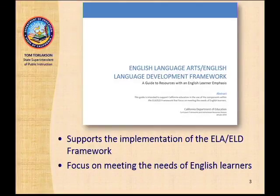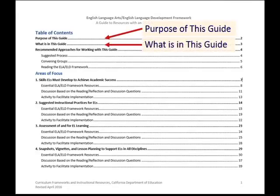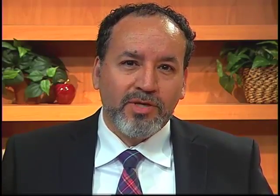This guide is intended to support California educators in the use of the resources throughout the ELA-ELD framework that focus on meeting the needs of English learners. If you have accessed this guide, you can see in the Table of Contents that there are brief discussions on the purpose of the guide, what is in the guide, and some recommended approaches for working with the guide. This guide is organized into four areas of focus as possible entry points into the ELA-ELD framework. The recommended progression is from the first to the fourth area of focus, because understanding the expectations of English learners is foundational to exploring the three subsequent areas.